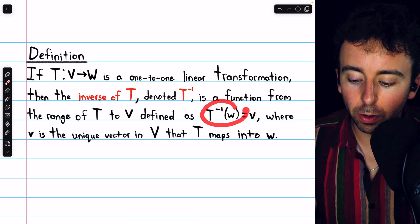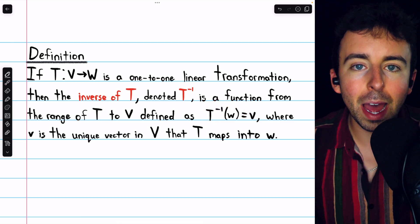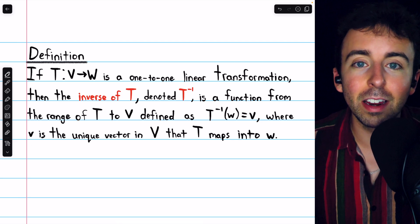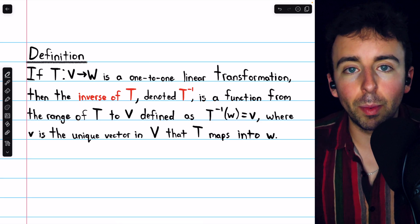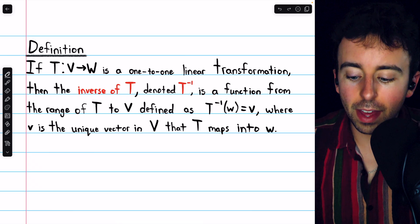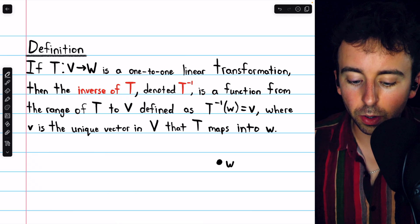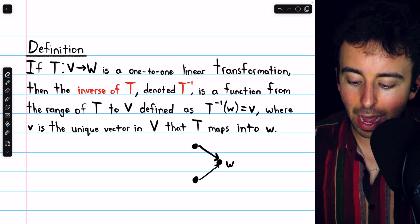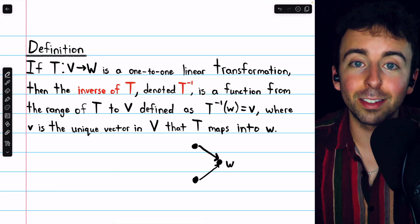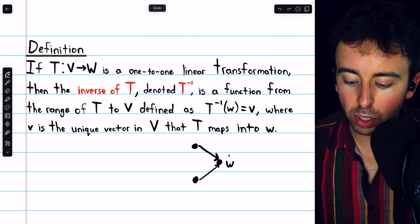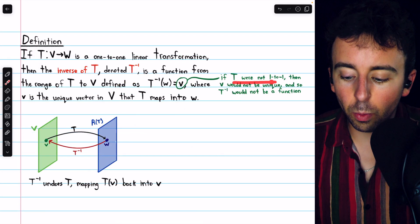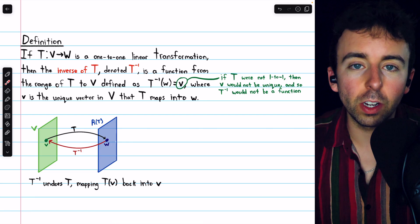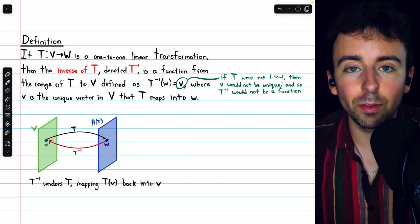This is why the linear transformation T has to be one-to-one. Otherwise, when we take the inverse of W, it would not be clear what that should map to. If multiple vectors map to W through the transformation T, then which of those should the inverse map to? There's no good answer to that question. In a picture: if there are two vectors in the domain that map to the same W, then the inverse function is not defined. If T were not one-to-one, then V would not be unique, and so T inverse would not be a function.